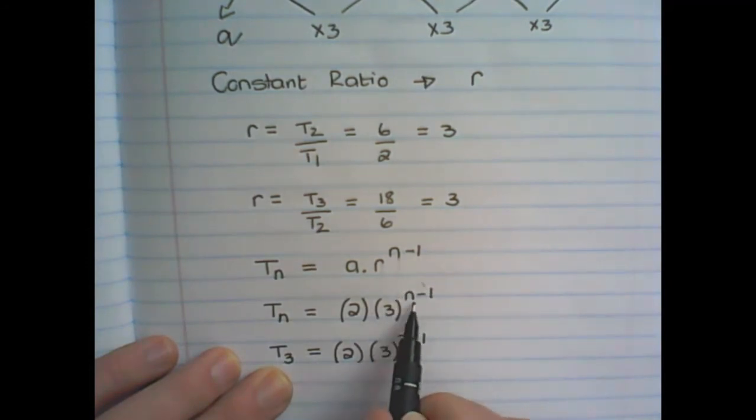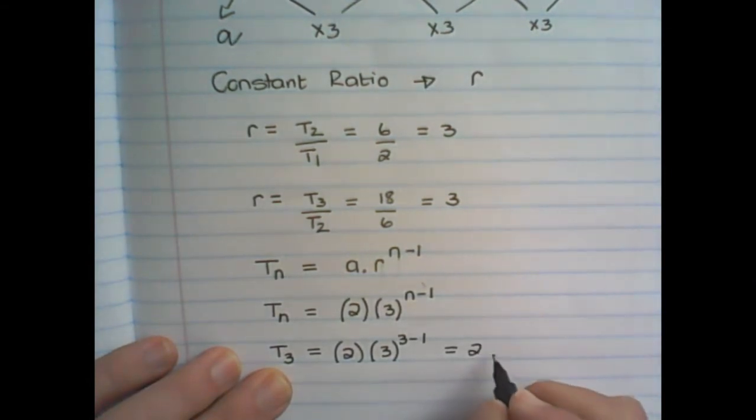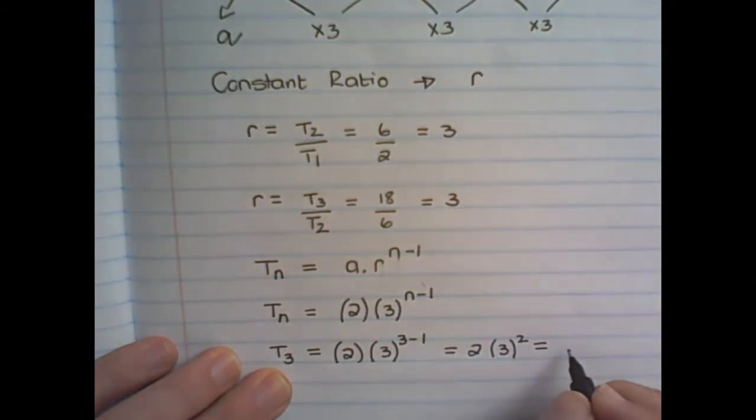Notice I am replacing N with 3. And if I simplify, I have 2 times 3 square, which is 2 times 9. And that gives us 18.